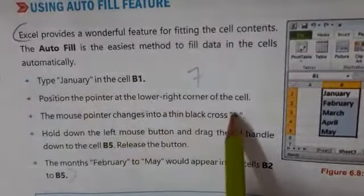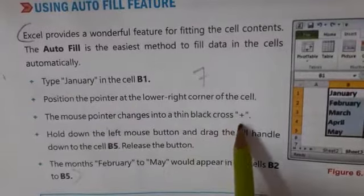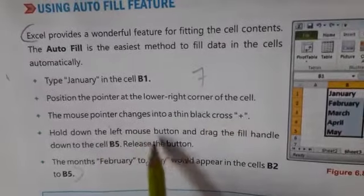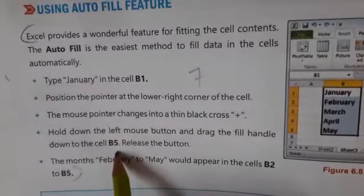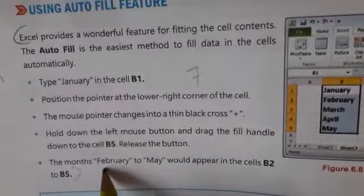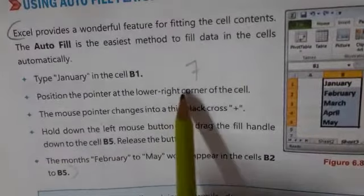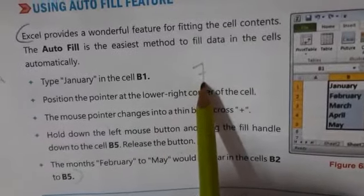Position the pointer at the lower right corner of the cell. Mouse pointer changes into a thick black cross. Then hold down the left mouse button and drag the fill handle down to cell B5, then release the button. So the months February to May would appear in the cells B2 to B5. This is the answer number seven.